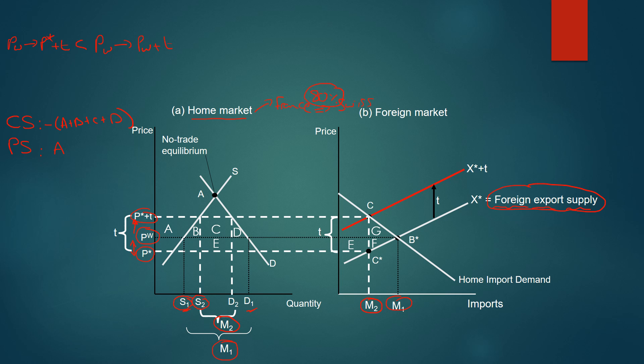Remember, the producer surplus is the area bound by the supply curve. And then what about tax revenue? Well, they're getting T as a tax revenue, T, and they're importing M2 down here. So therefore, we get tax revenue of C and E. So C plus E.